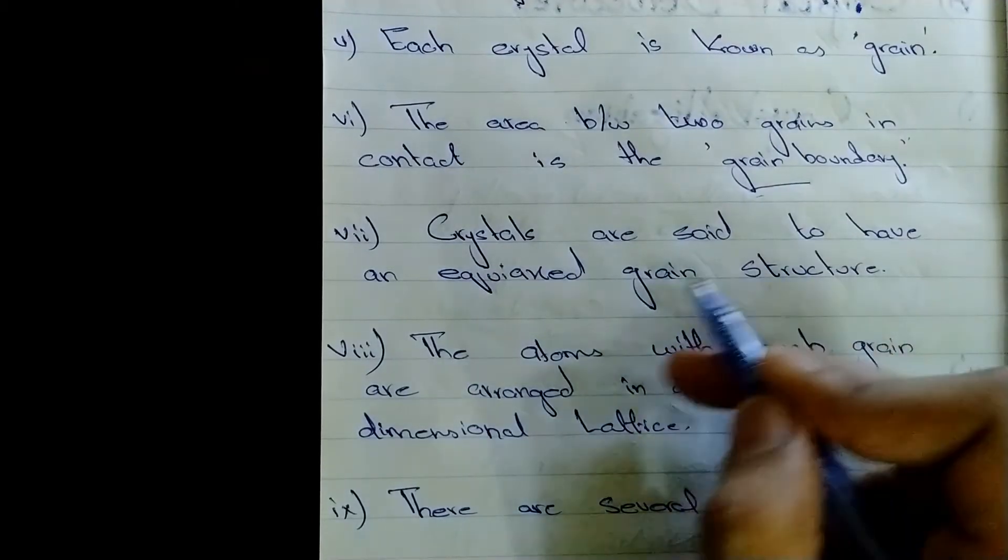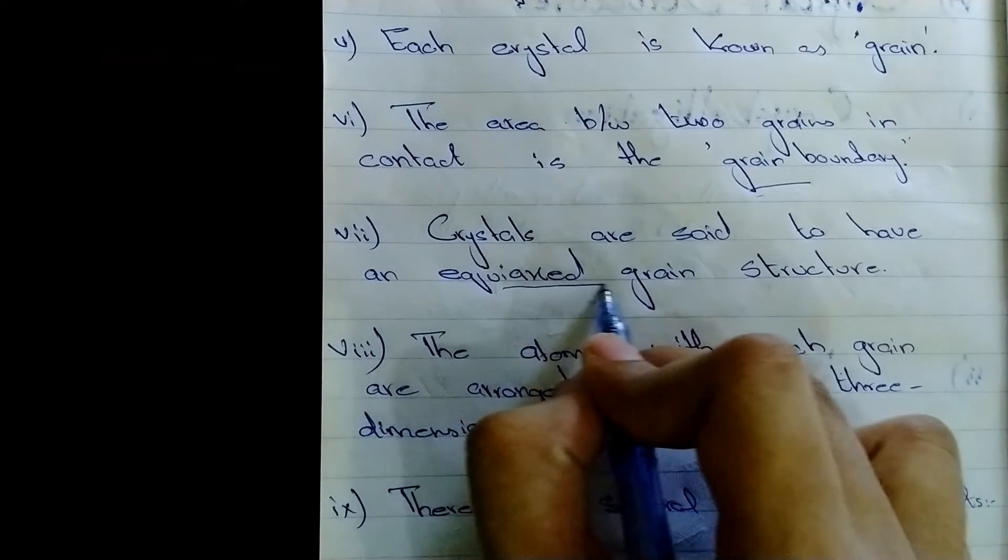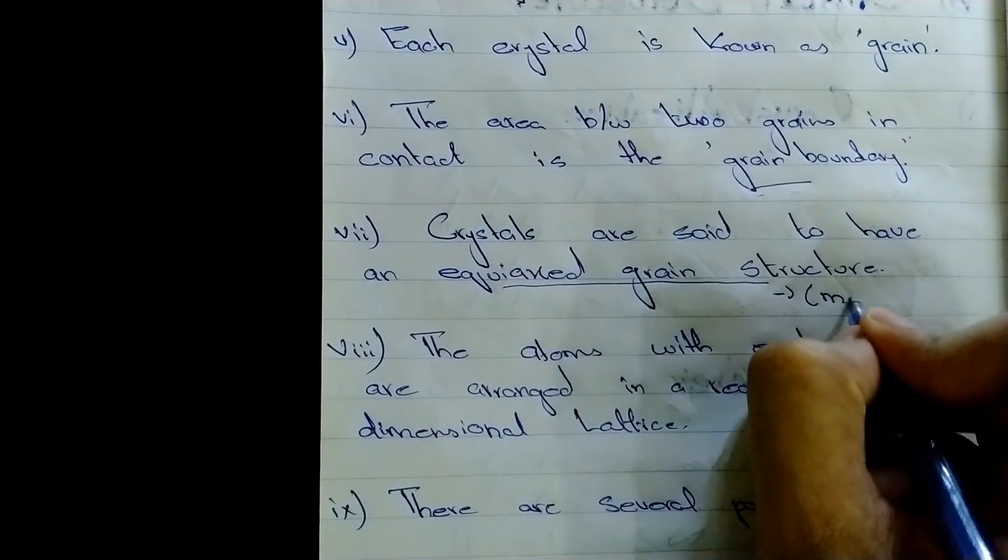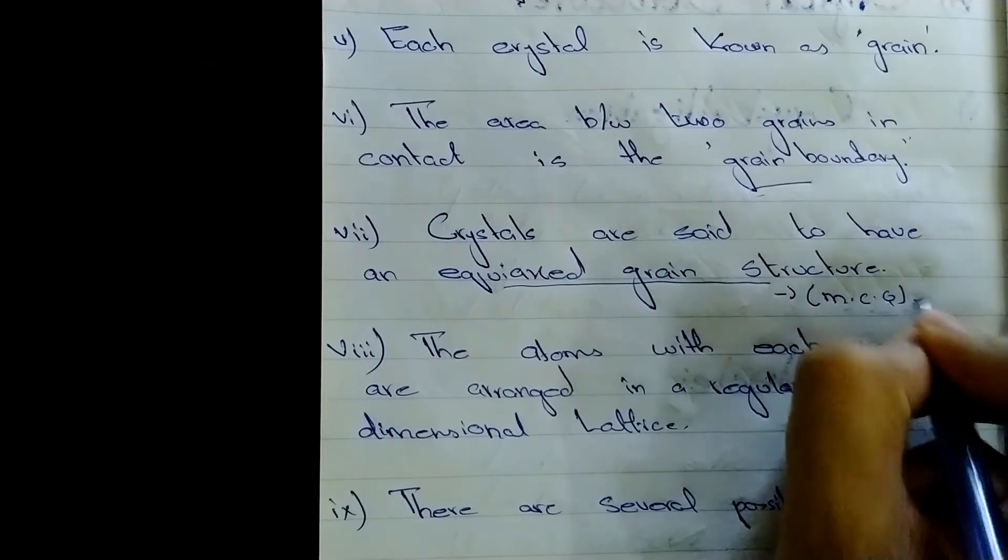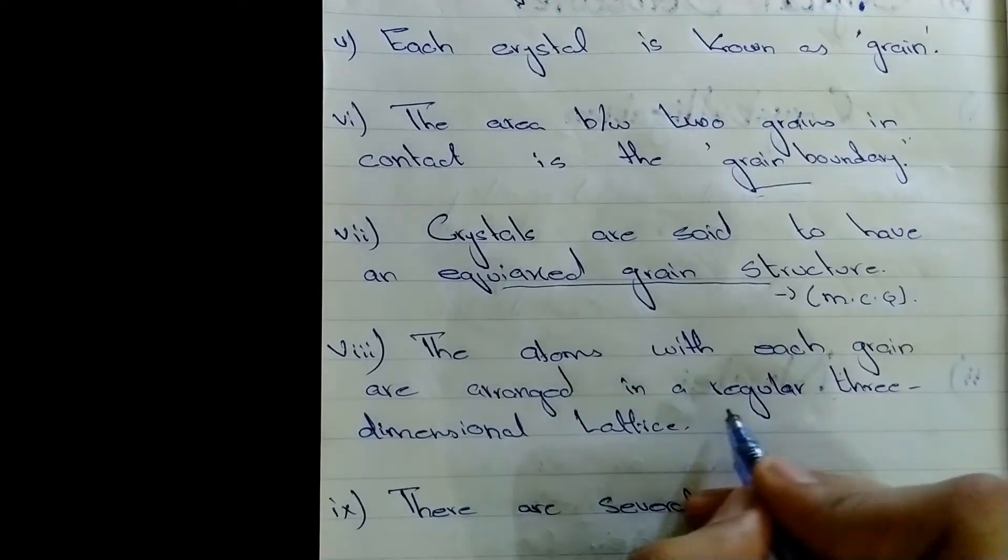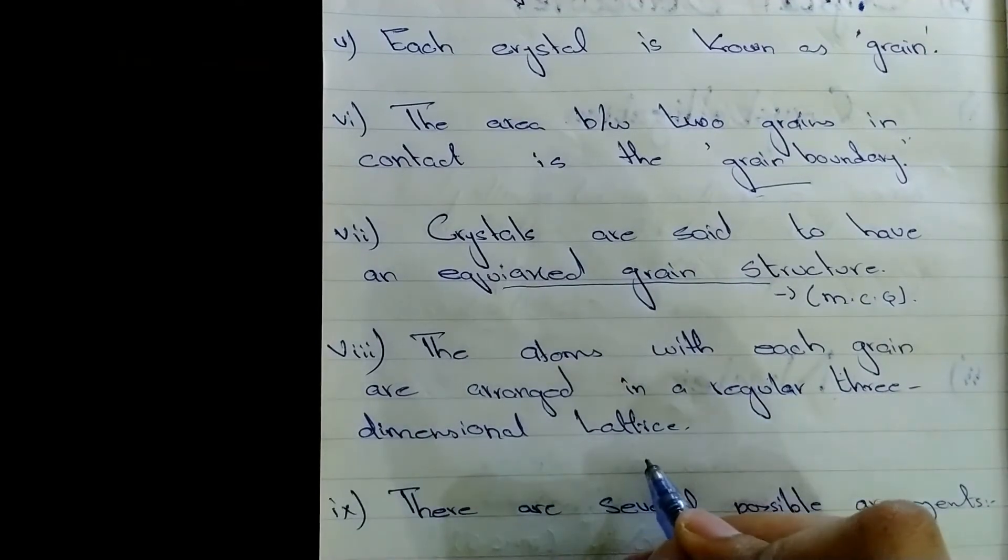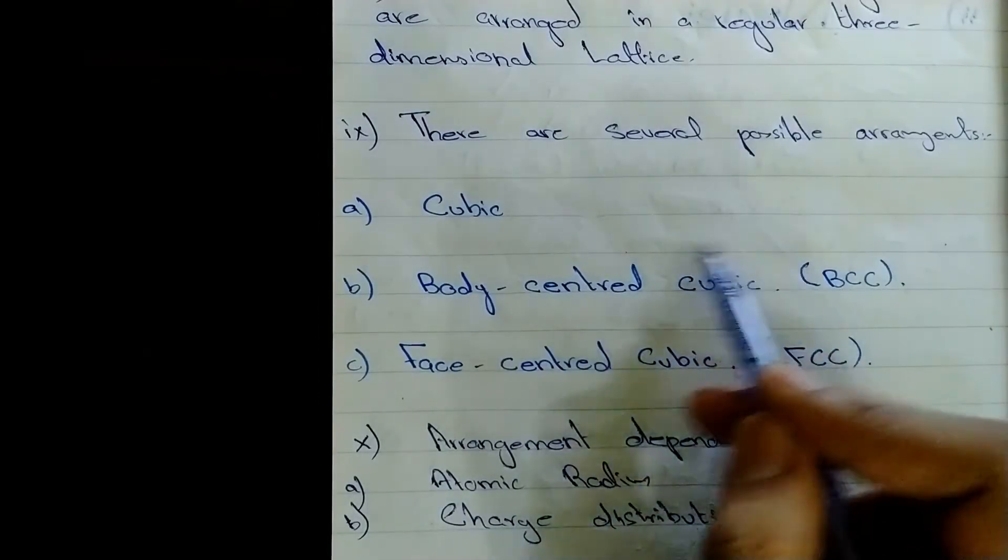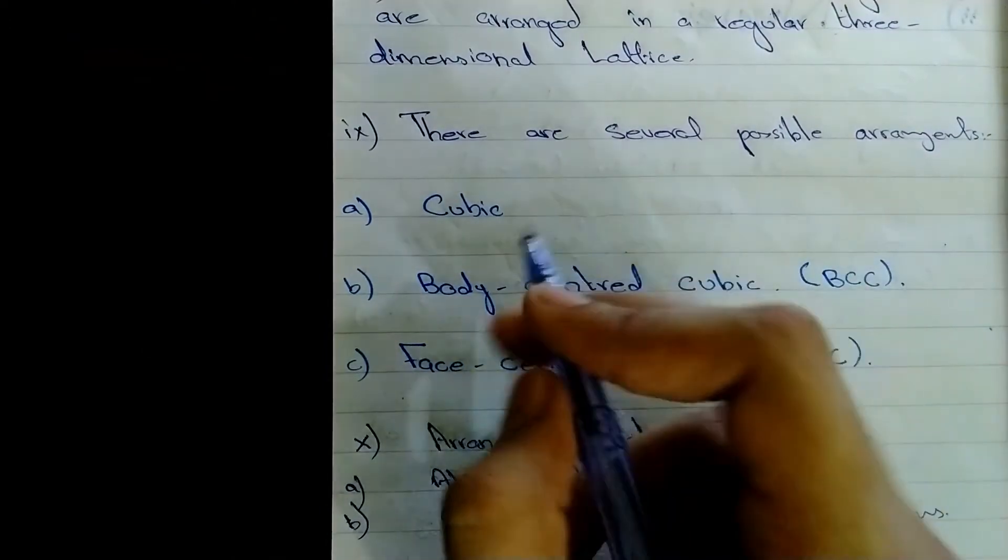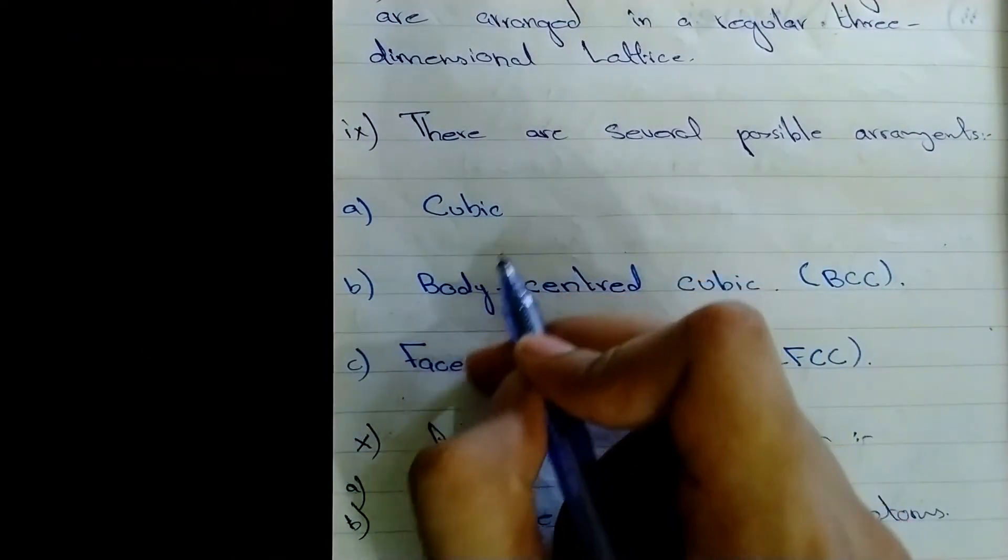Crystals are said to have equi-axed grain structure. This is also frequently asked in MCQs and exams. The atoms within each grain are arranged in regular three-dimensional lattice. There are several possible arrangements of atoms in a crystal structure.